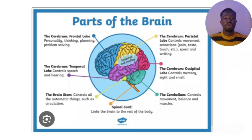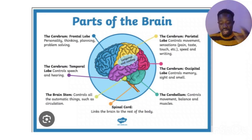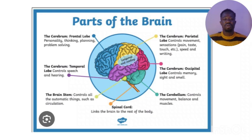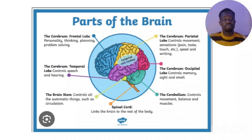Before understanding the clinical manifestations of an ischemic stroke patient, we need to look at the anatomy and physiology of the brain. The brain has a cerebrum, which has two hemispheres. These two hemispheres have four lobes: the frontal lobe, the parietal lobe, the temporal lobe, and the occipital lobe. These lobes are responsible for different functions.